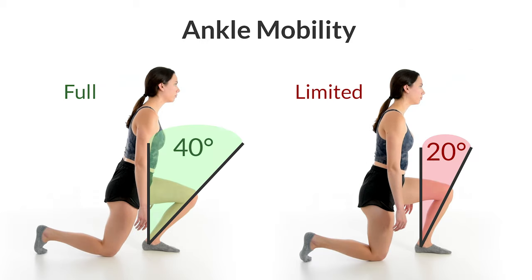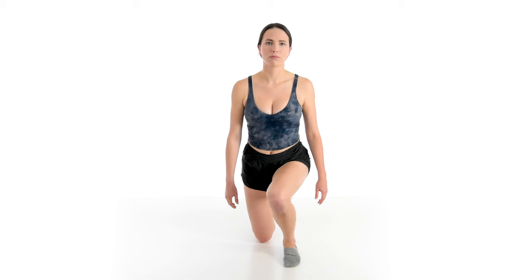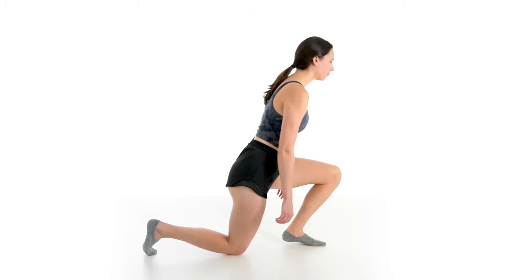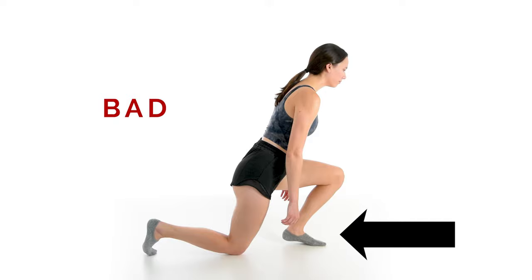We're looking for the ankle to bend at least 30 degrees without compensation. Ankle mobility is limited if any one of the following three things happens: one, the ankle doesn't bend to at least 30 degrees; two, the knee drives inward over the big toe; or three, the heel leaves the ground at any point during the test.